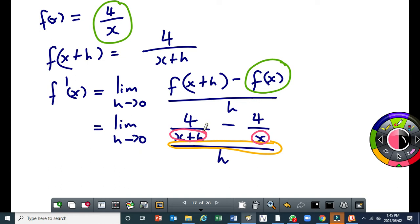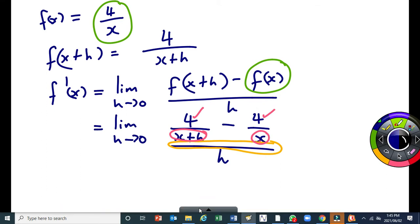Fortunately, the LCD is going to be the product of the two. So if you want to get LCD, you need to multiply this numerator by x, this numerator by x+h. So if you do that, you end up getting the limit as h tends to 0 of 4x minus 4x minus 4h.